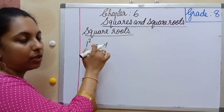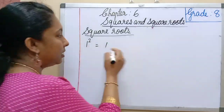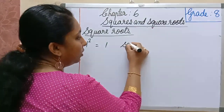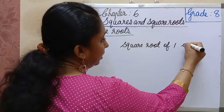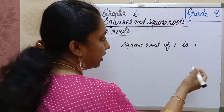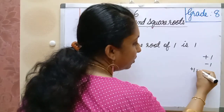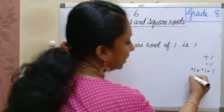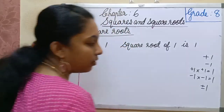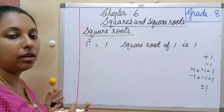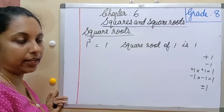We know how to find the square of a number. 1 squared is 1, so the square root of 1 is 1. Actually, the square root of 1 is plus 1 or minus 1, because +1 × +1 = 1 and −1 × −1 = 1. But we are taking only positive square roots, so square root of 1 is 1.